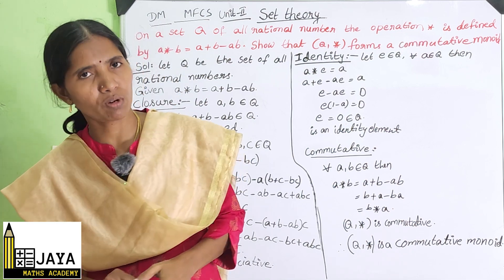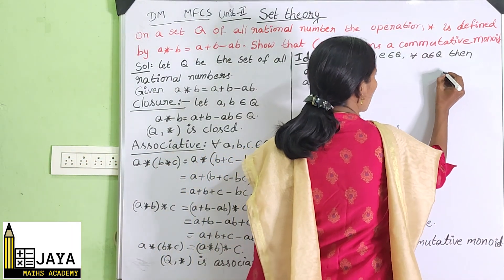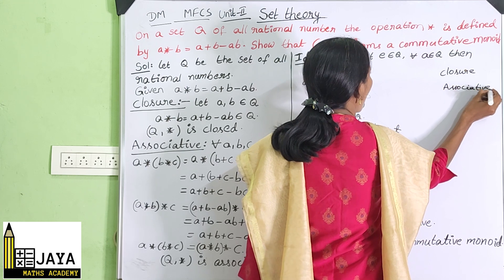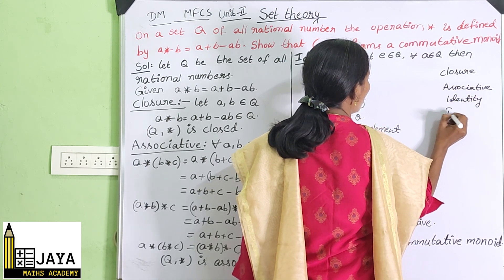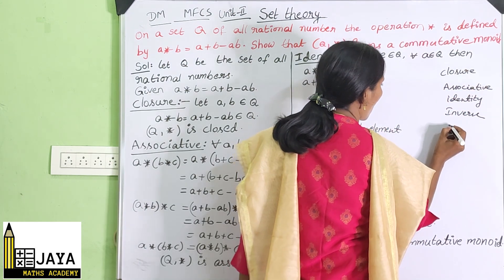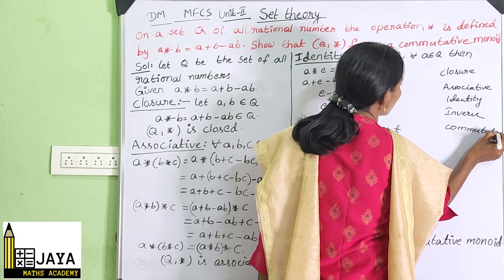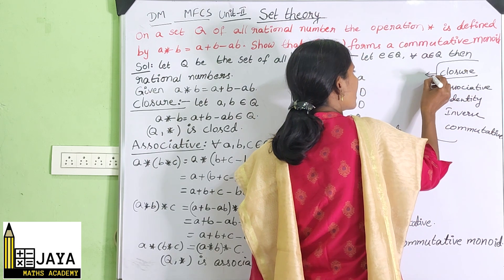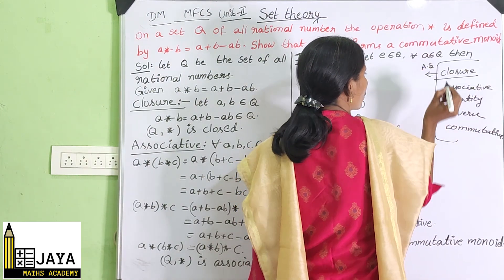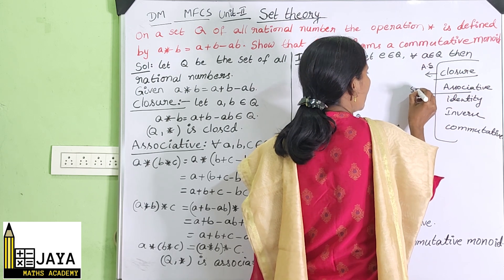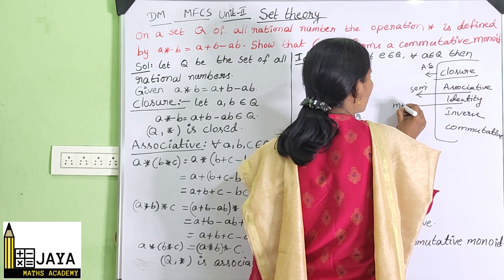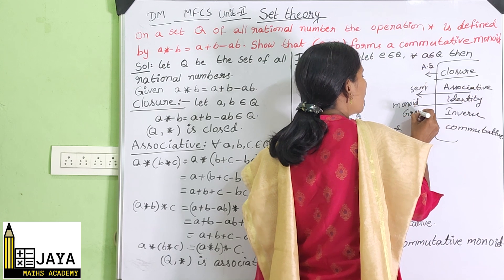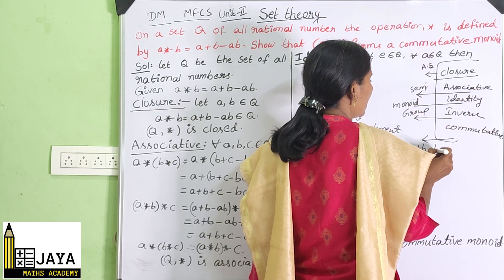First, you want to know what a commutative monoid is — we already discussed this. The properties are: closure, associative, identity, inverse, and commutative. Up to closure it is an algebraic structure; up to associative it is a semi-group; up to identity it is a monoid; up to inverse it is a group; and up to commutative it is an abelian group.